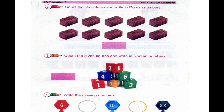Count the chocolates and write in Roman numbers. Now we have to count these chocolates and write them in Roman numbers: 1, 2, 3, 4, 5, 6, 7, 8, 9, 10. The total of chocolates is 10. Single X shows us 10.